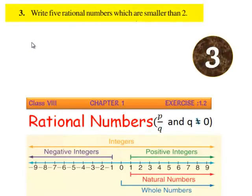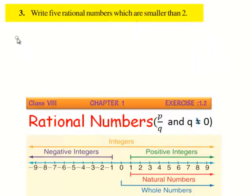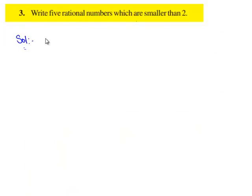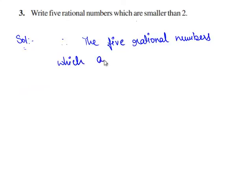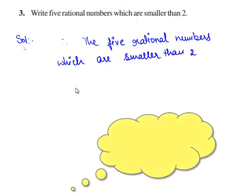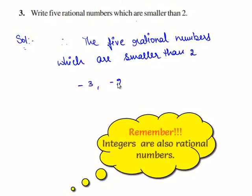So, now let us move on to the third question. The question is: write 5 rational numbers which are smaller than 2. As we know, any negative rational number is always less than the positive rational numbers. Therefore, any 5 rational numbers which are negative are always smaller than 2. And also, we know 0 and 1 are smaller than 2. Therefore, the 5 rational numbers which are smaller than 2 can be: minus 3, minus 2, minus 1, 0, and 1.